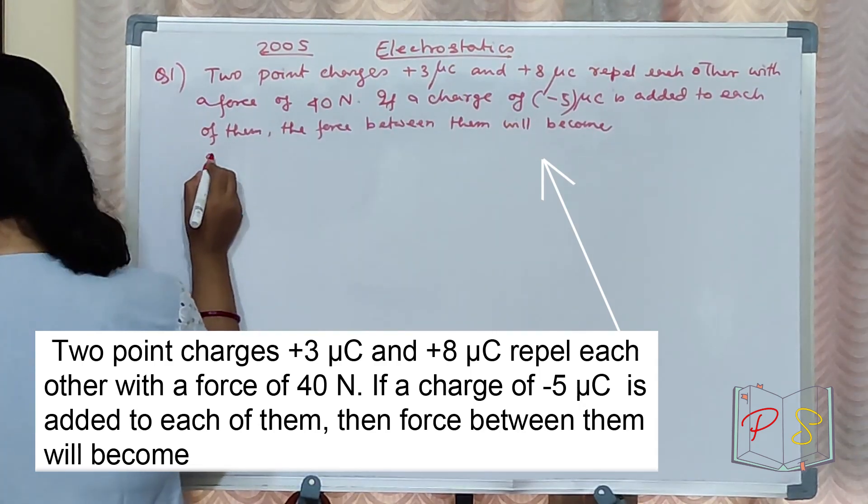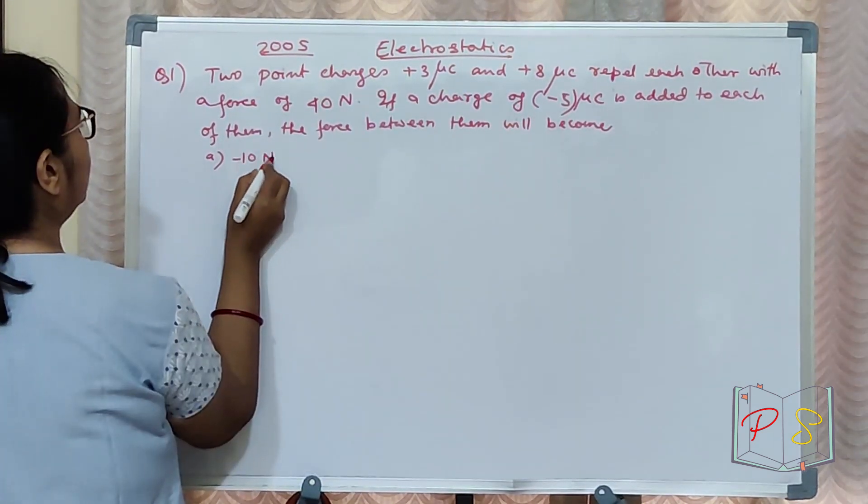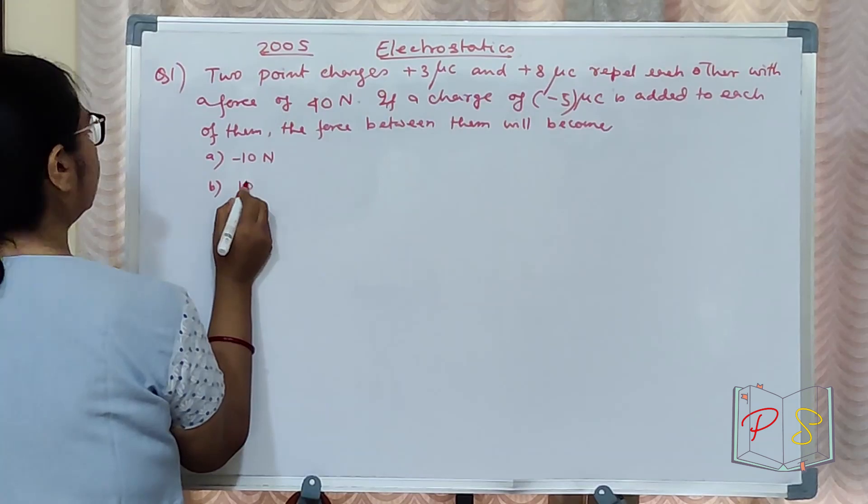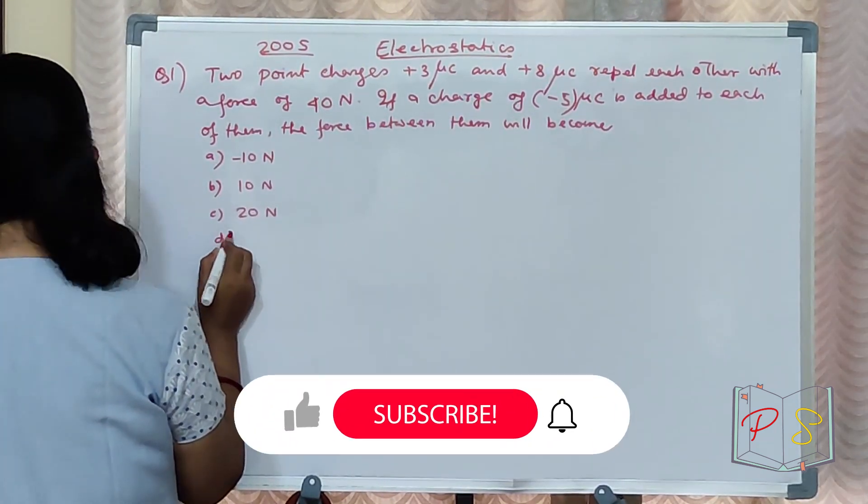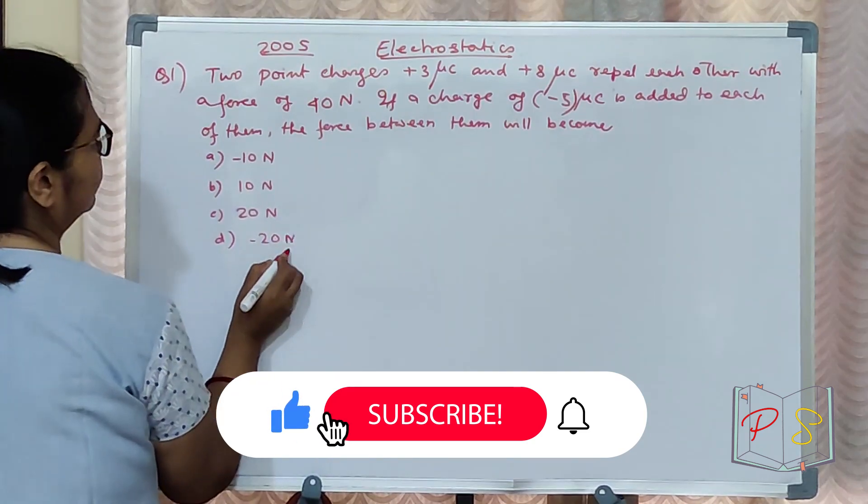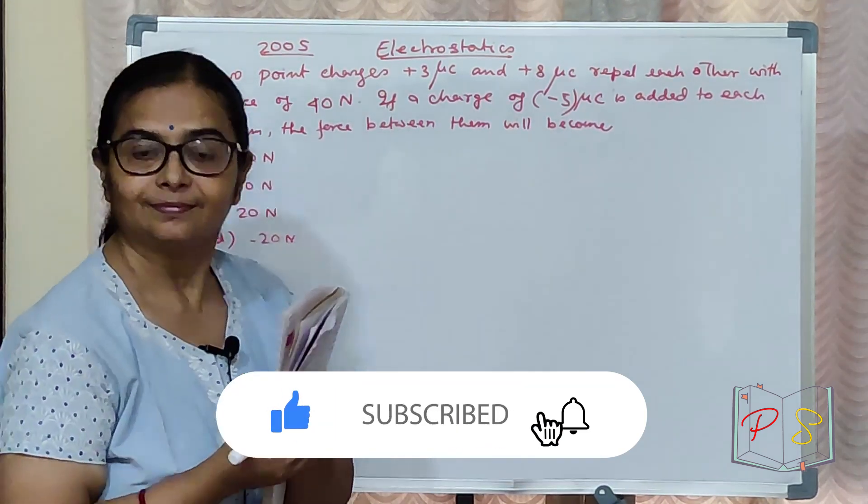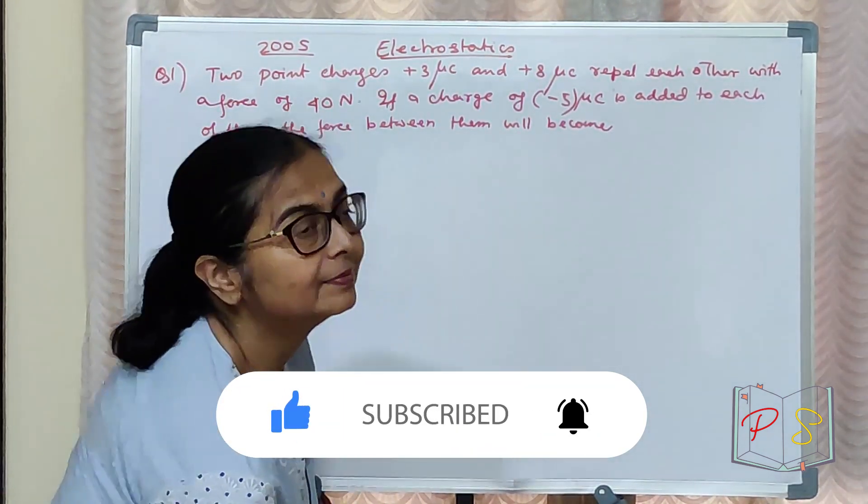What are the options? A option is minus 10 Newton. B option is 10 Newton. C is 20 Newton and D is minus 20 Newton. Very, very easy. Take a look.